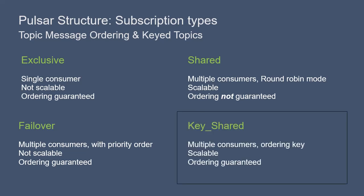Finally, there's Key Shared. Key Shared subscriptions are what you will want to use for most cases, because they combine the ordering guarantees of the Exclusive and Failover subscriptions and the scalability of the Shared subscription. Key Shared subscriptions allow multiple consumers to attach to the same subscription. Messages need to specify the key or ordering key, and the same key or ordering key is delivered to only one consumer. As a final note on ordering from the producer side: if a producer is sending a message to multiple topics, there is no guarantee that it will be read from each topic within the same order.